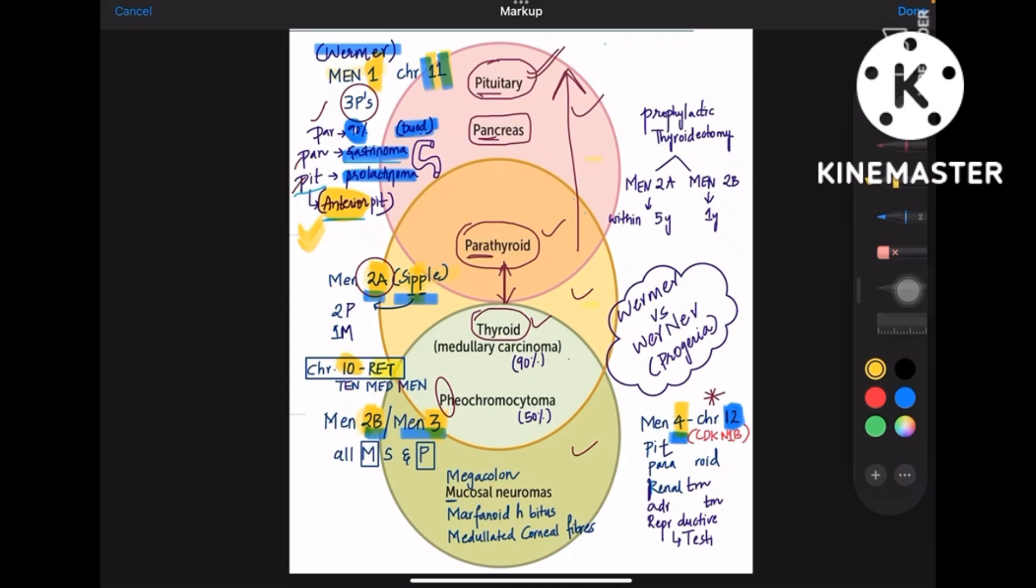Now coming to MEN2A which is otherwise called Sipple syndrome. Sipple syndrome has two P's in it, so the syndrome also has two P organs: one is parathyroid and the other is pheochromocytoma. And the remaining one is thyroid, which is medullary thyroid carcinoma.